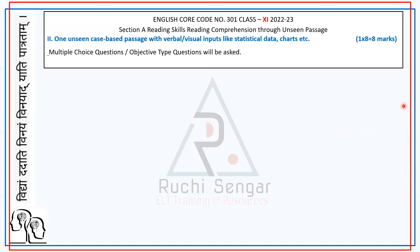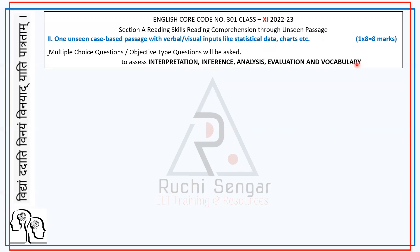It's a case-based factual passage. It says verbal or visual inputs, statistical data, charts — but it could even be just verbal inputs, so it's not always necessary to include charts or data. Both types of questions are asked. Look at the competencies: in a case-based passage, they move to more analytical — inference, analysis, and evaluation, along with interpretation. Comprehension has been knocked out. For class 11, you have eight questions, not ten, because you also have the note-making section.